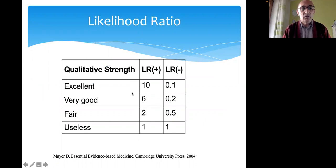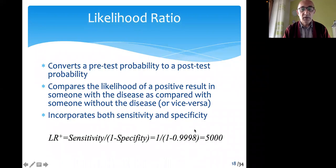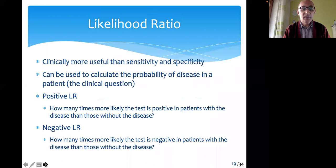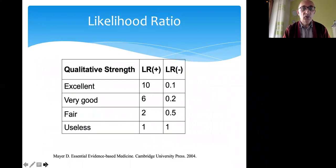The likelihood ratio of a test is categorized as acceptable if it is 2 or above. In our case, the CPK test had a likelihood ratio of 5,000. So by combining sensitivity and specificity, we have the likelihood ratio.